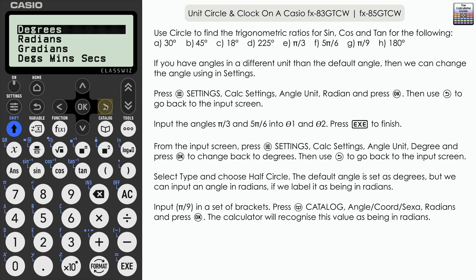Pi over nine, and then it's catalog, down to angle, toward sexagesimal, and then choose radians. You can see that there is an r displayed here. This indicates to the calculator that the value we've inputted previously in the brackets is a radian measure and it will process it as such even though the default setting is for degrees. I'm going to input angle 2 theta 2 as a degree measurement, 180 degrees. Press execute.